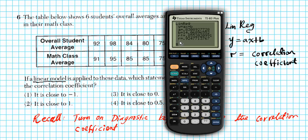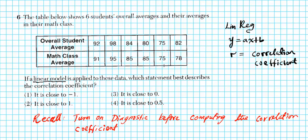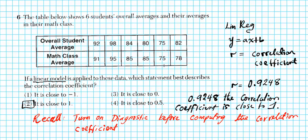There goes the linear regression. It shows you A, B, R squared, and R. That is what we're looking for. R is 0.9248. So R equals 0.9248. So what does this tell us? It tells us that the correlation coefficient is close to positive 1. 0.9248, the correlation coefficient is close to 1. So that's why our answer is option number 2.